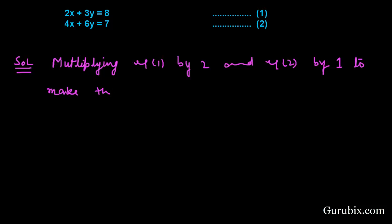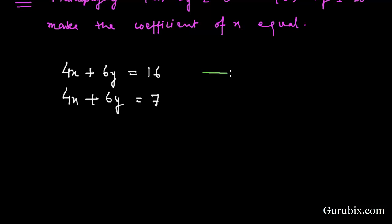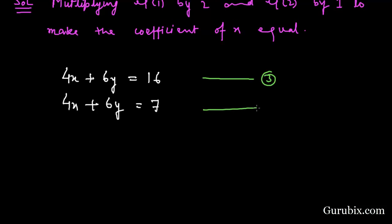If we multiply equation number one by two, then we have 4x + 6y = 16. And if we multiply equation number two by one, then we have 4x + 6y = 7. We label this as equation number three and this is equation number four, and now we shall subtract.